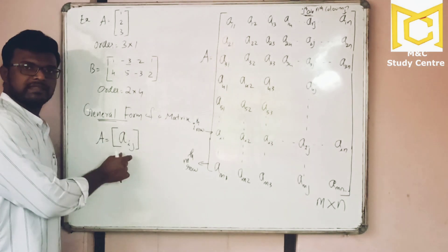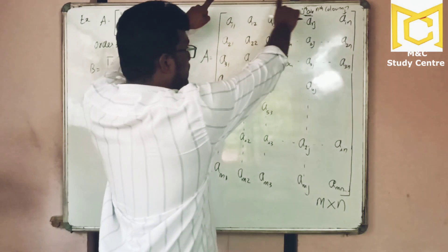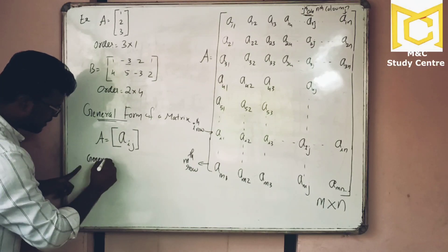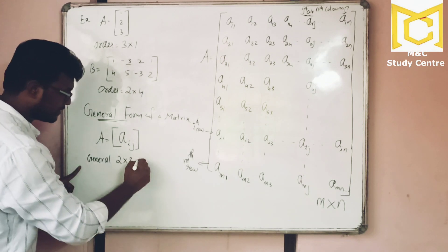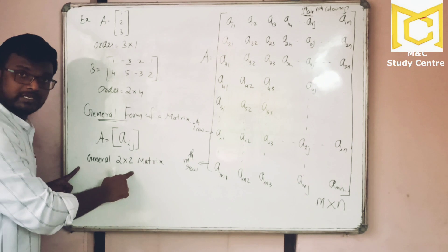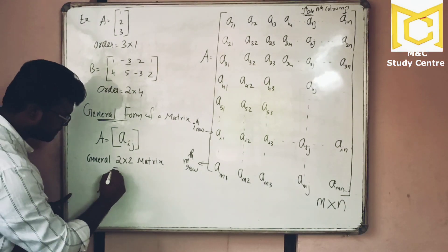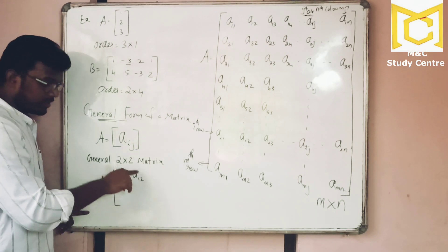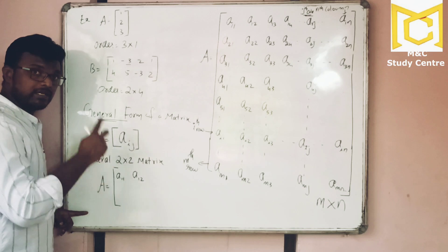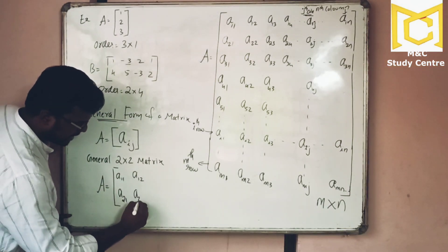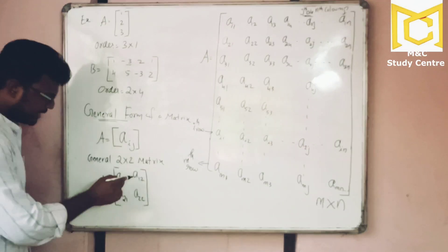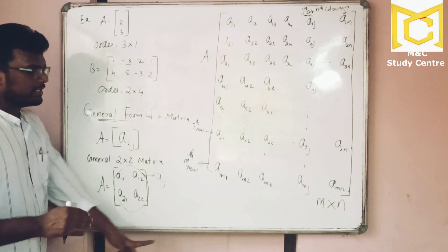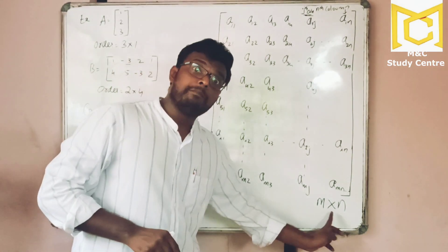How to read this: A equals matrix Aᵢⱼ, which means Aᵢⱼ represents all elements. For example, to write a general 2 by 2 matrix — two rows and two columns — you write: A₁₁, A₁₂ in the first row, and A₂₁, A₂₂ in the second row. This is a general 2 by 2 matrix, also called an n by n matrix.